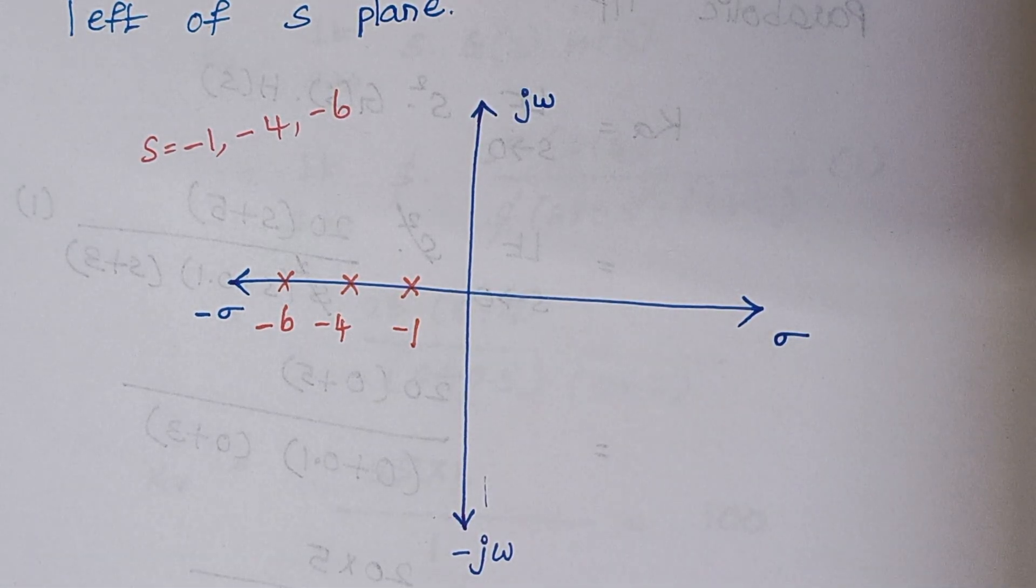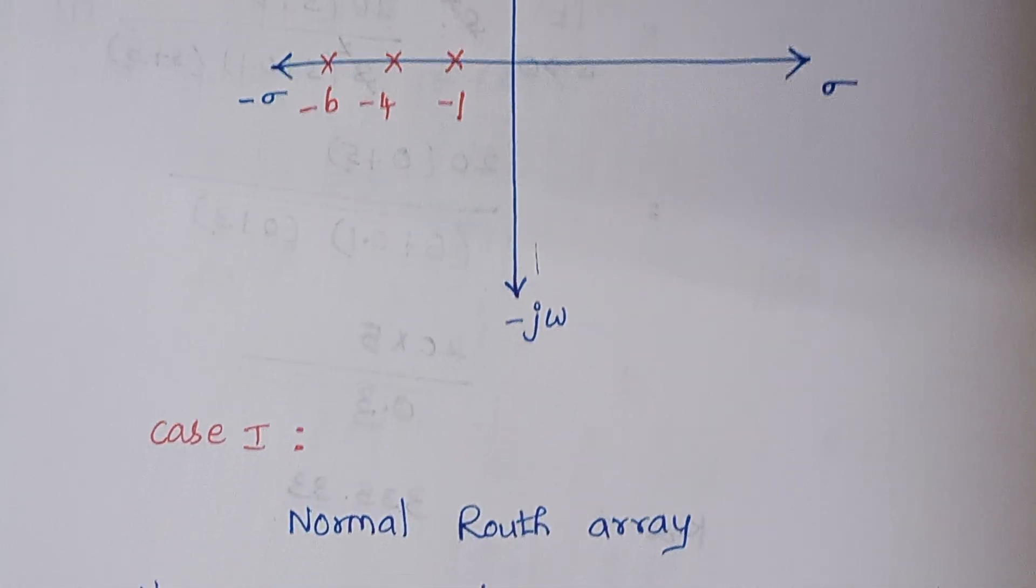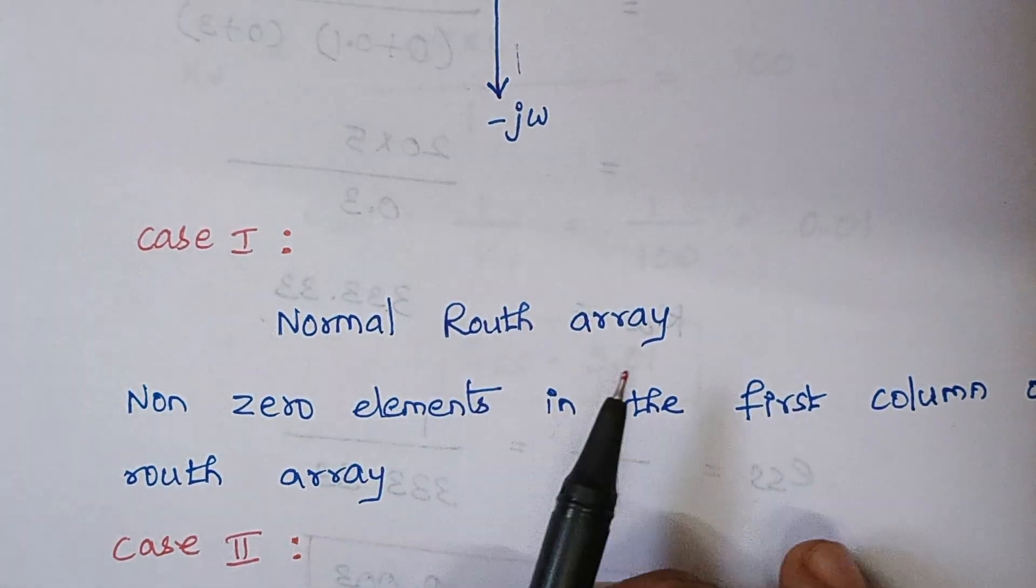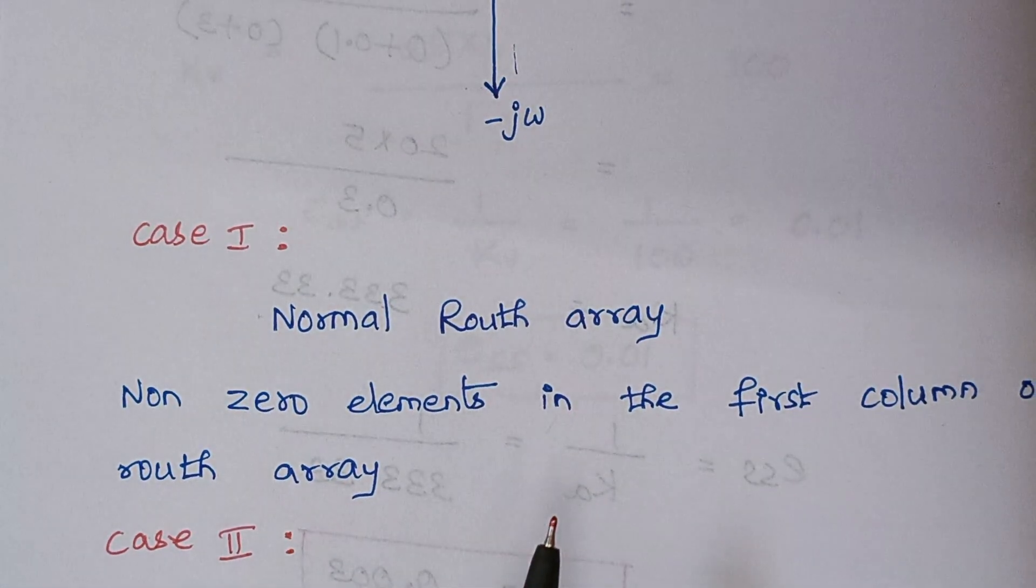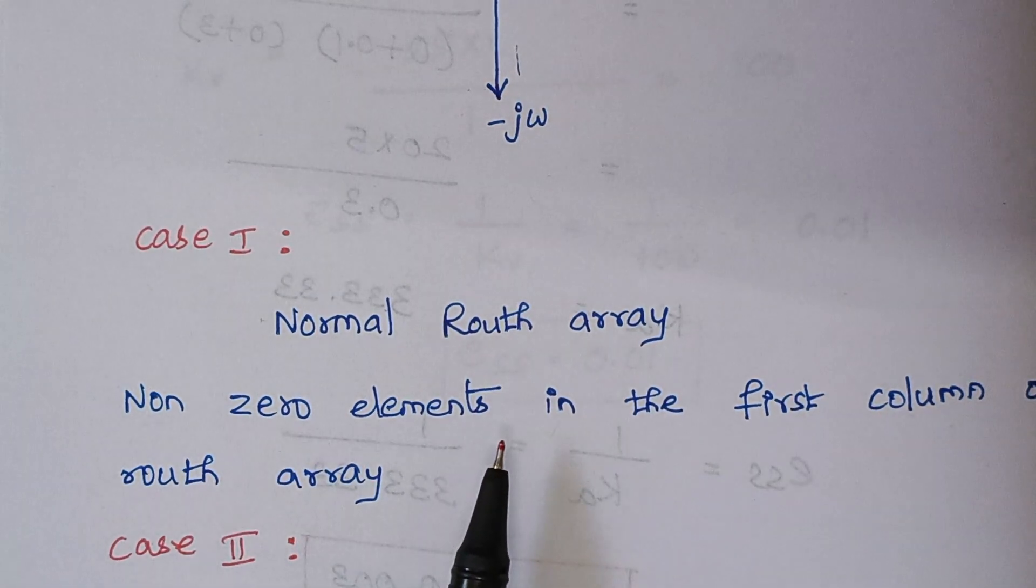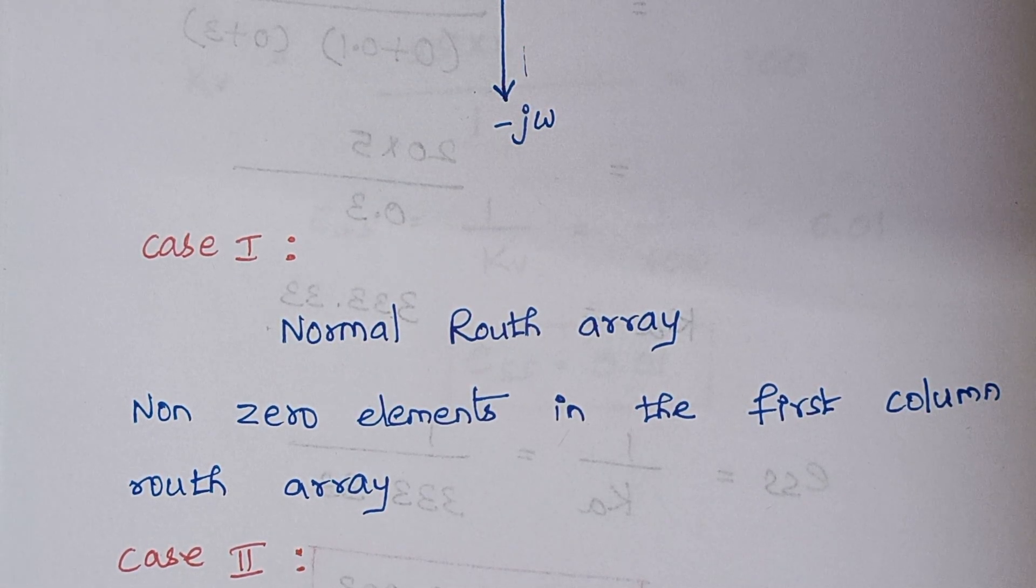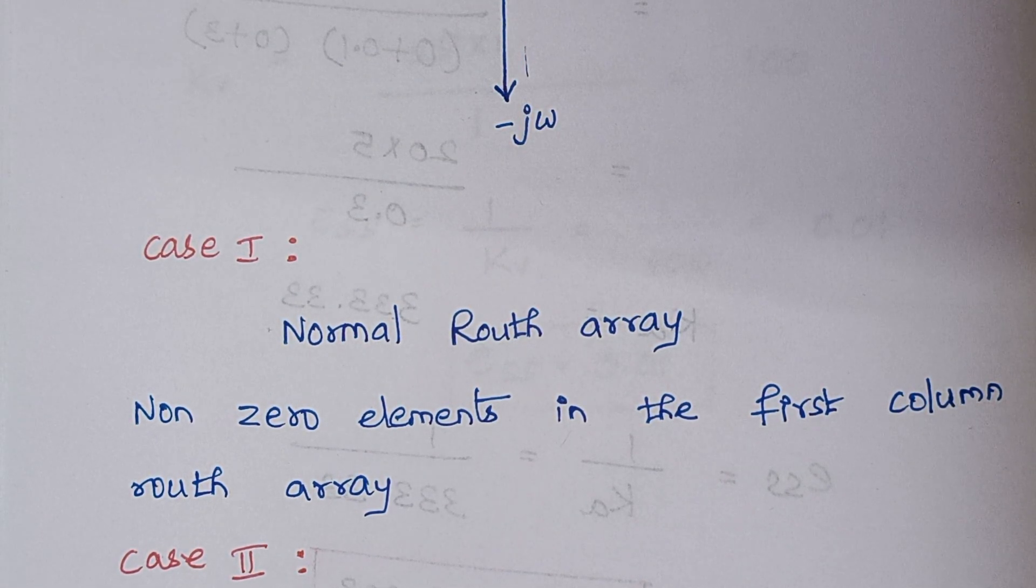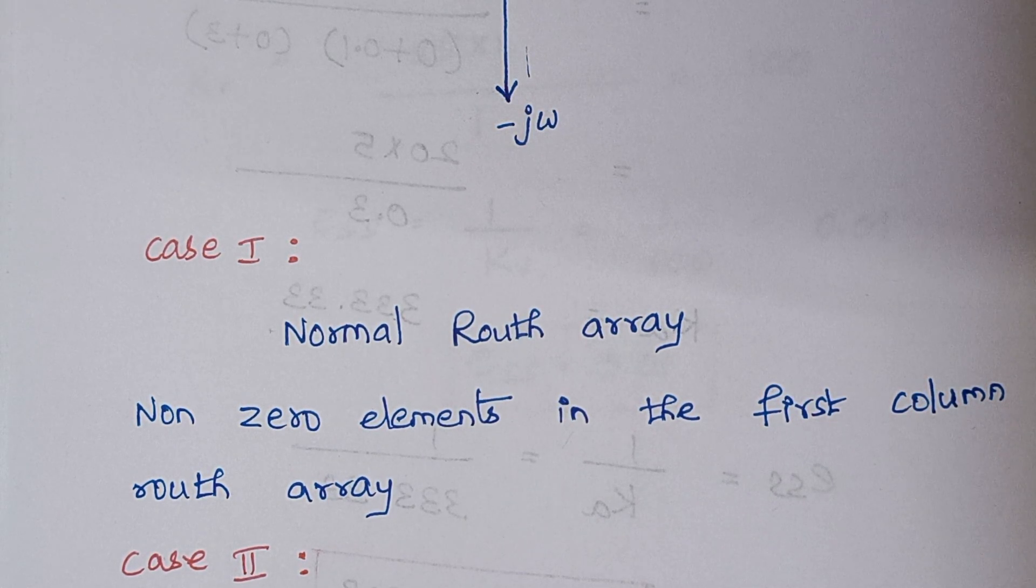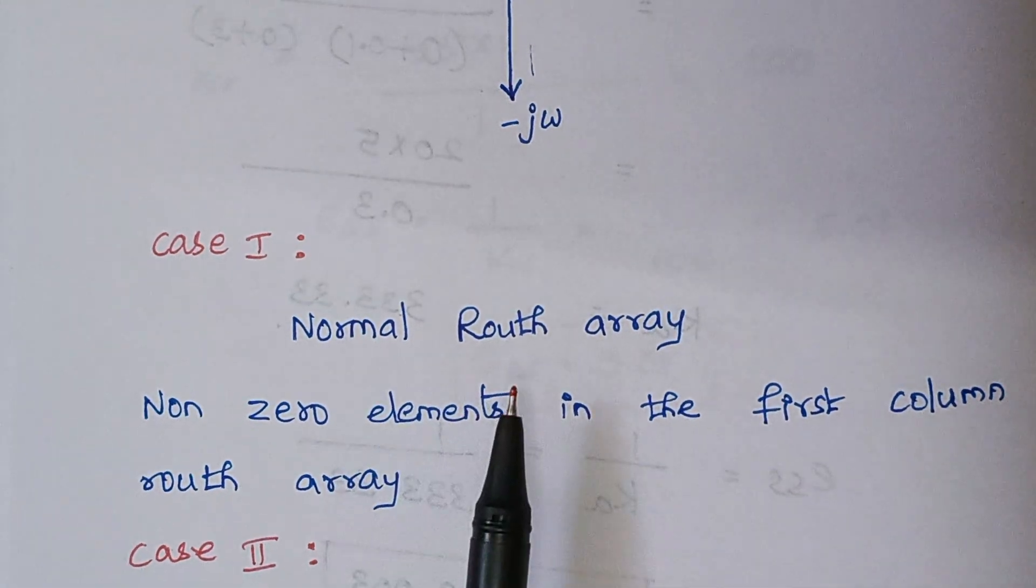Then the next thing is there are three categories of solving Routh-Hurwitz criteria. So the first one is, this is a normal Routh array. Normal Routh array is nothing but there will be no zero elements in the first column. Regarding Routh array, you will be having n number of columns. In the n number of columns, you will be considering only the first column. So if the first column has no non-zero elements, then it is said to be a normal Routh array.